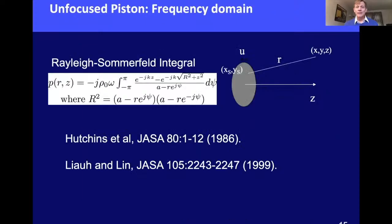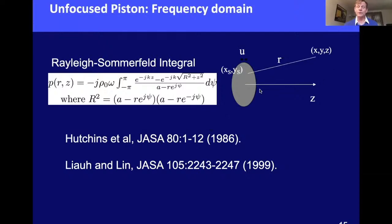The Rayleigh-Sommerfeld 2D surface integral can be reduced to a 1D line integral, originally published by Hutchins in the 1980s and also published in JASA in 1999. This allows calculation of the pressure field everywhere from an unfocused transducer, and the plots shown previously were computed by solving this integral in MATLAB.